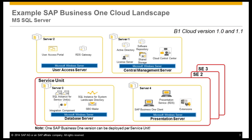In the first example, you can see an overview of the system landscape set up when using Microsoft components. Generic components, which are outside the service unit, are the central management server and the user access server. The central management server contains different components. The main components are the domain controller with the active directory to maintain the single users, and the Cloud Control Center, which supports the cloud landscape administration. The user access server gives the possibility to get access to a customer-owned portal.